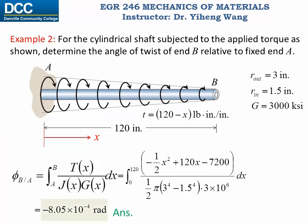That is our answer. Since the angle of twist is negative and our chosen x-axis is in this direction, a negative angle of twist indicates a clockwise rotation about the x-axis. In other words, end B has rotated clockwise relative to end A.